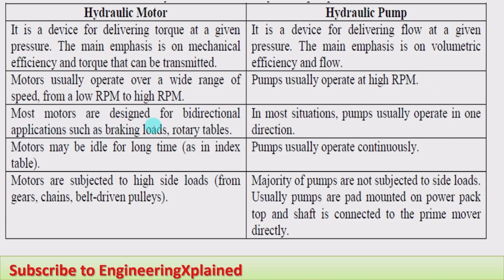Most motors are designed for bi-directional applications such as braking loads, rotary tables, etc. In most situations, pumps usually operate in only one direction. So motors operate in both clockwise and anticlockwise directions, while pumps rotate in only one direction.